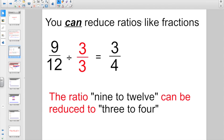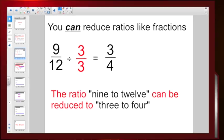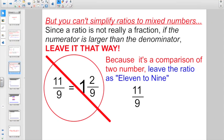You can reduce ratios like fractions. If I had a ratio nine to twelve, I could still divide both the numerator and the denominator by three and get it reduced down to a ratio of three to four. But you can't simplify ratios to mixed numbers. Since the ratio's not really a fraction, if the numerator is larger than the denominator, leave it that way. If you had a ratio that started out eleven to nine, you don't want to simplify it and make it one and two-ninths. Because it's a comparison of two numbers, leave the ratio as eleven to nine. The only time we're going to leave something where the numerator is larger than the denominator is with a ratio.